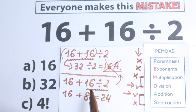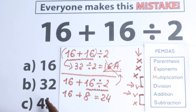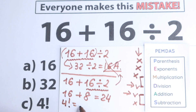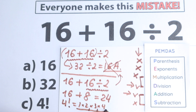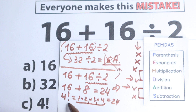So the correct solution gives us 24. But looking at the answer options — 16 is not the same, 32 is not the same. Right here we have 4 factorial, and this is a very tricky moment, because 4 factorial equals 1 times 2 times 3 times 4. So 1 times 2 is 2, 2 times 3 is 6, and 6 times 4 equals 24. So the correct answer according to PMDMC is 24, which is option C.